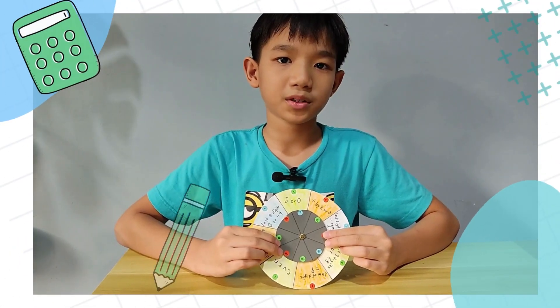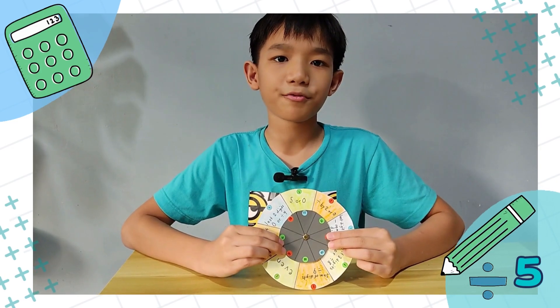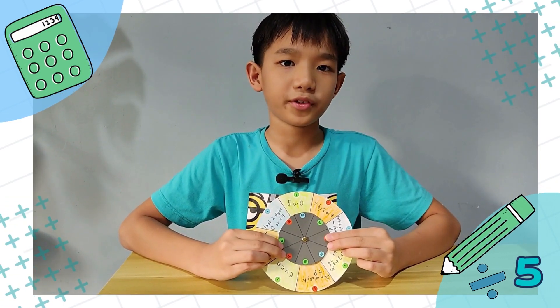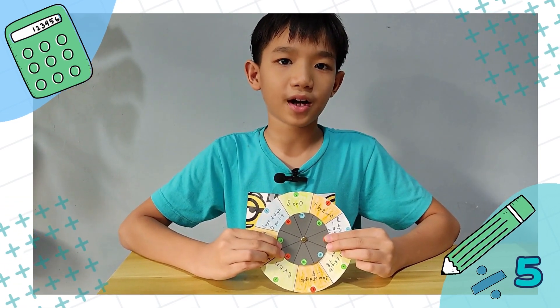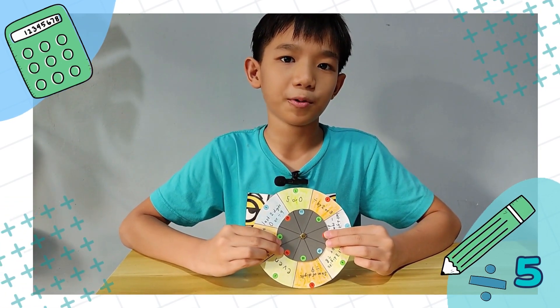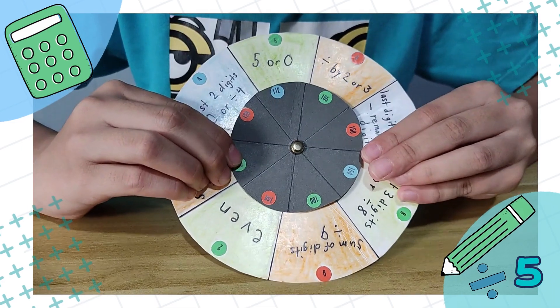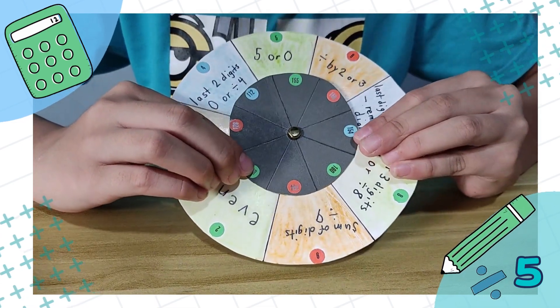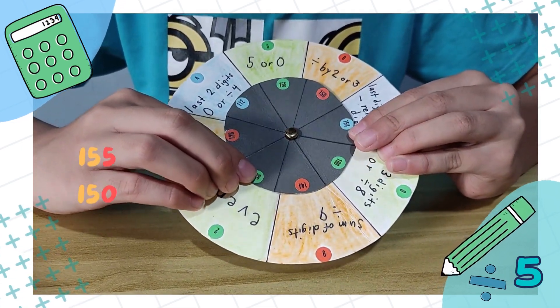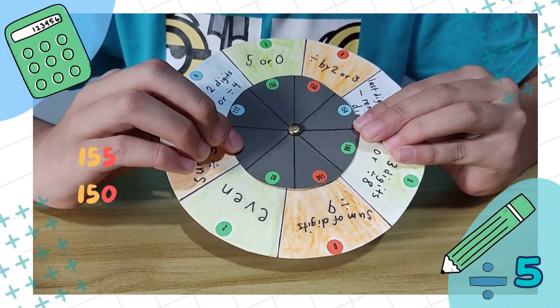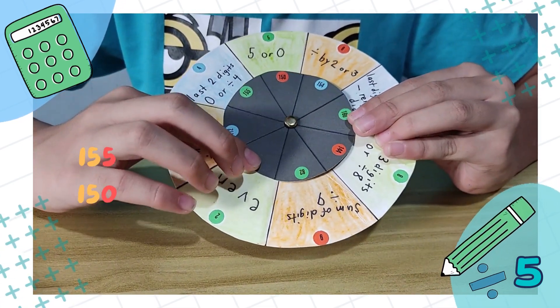A number is divisible by 5 if it ends in 5 or 0. For example, 155 and 150.